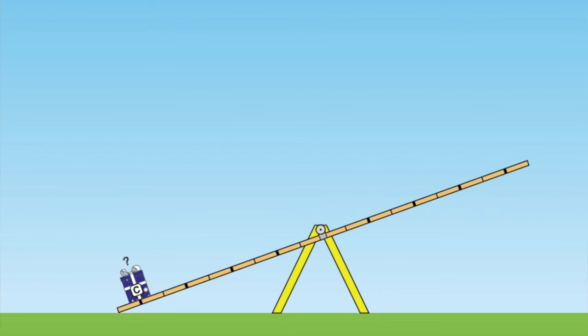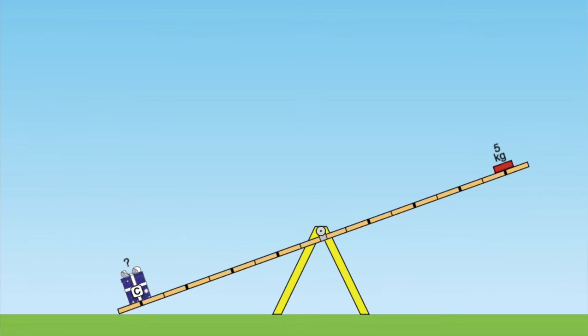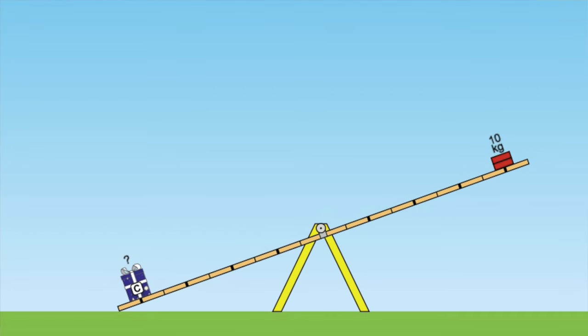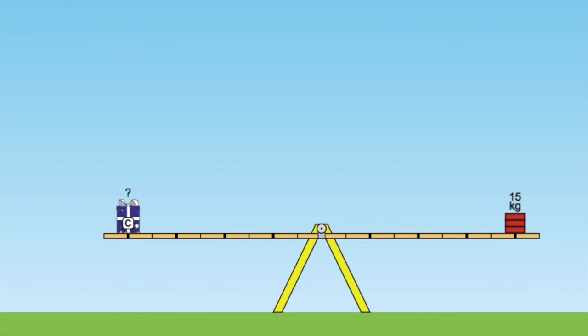Balances work like a teeter-totter. The object to be massed is on one seat of the teeter-totter, and moving the riders farther out onto the beams is like adding masses of known amounts to the other teeter-totter seat. When both sides are equal, they are said to balance. Then we know that the mass of the object is equal to the sum of the masses on the other seat.